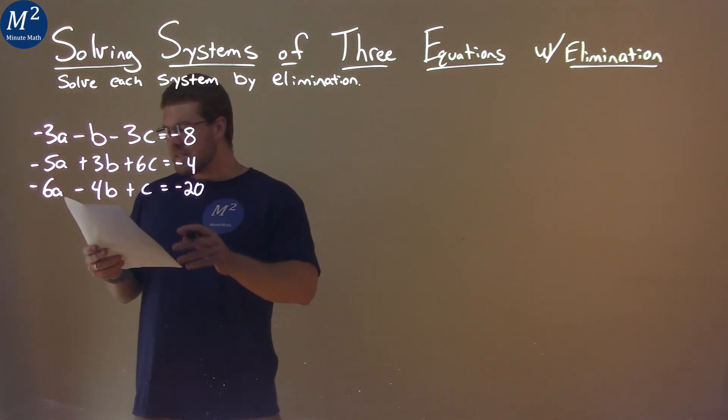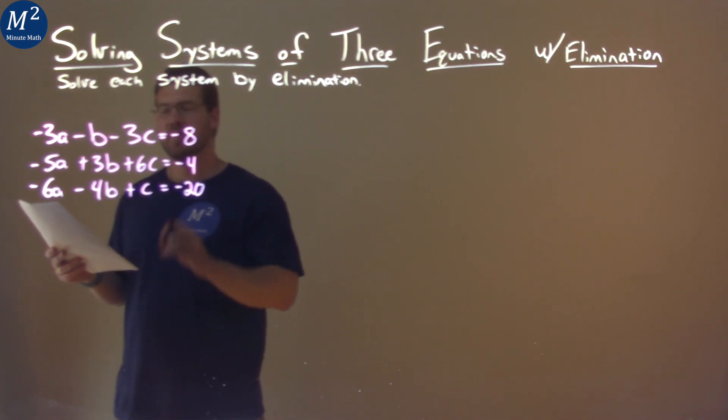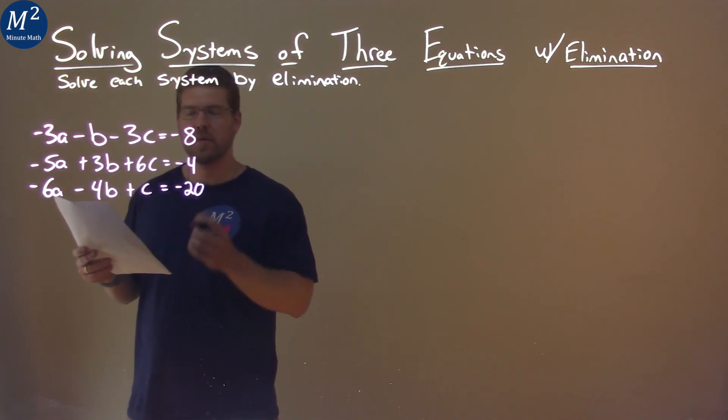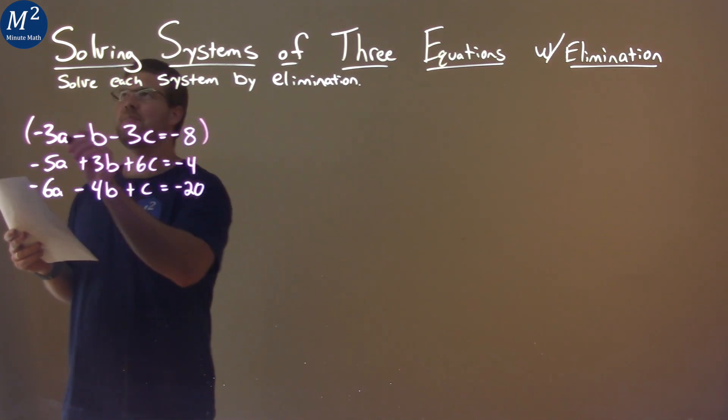I can see here if I multiply the first equation by negative 2 and bring the second equation, we will eliminate the a variable. So I'm going to take the top equation here, multiply by negative 2.